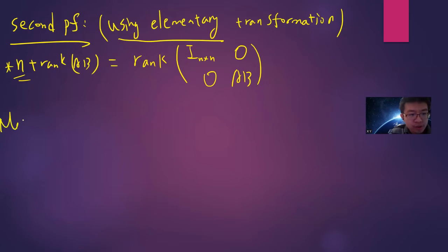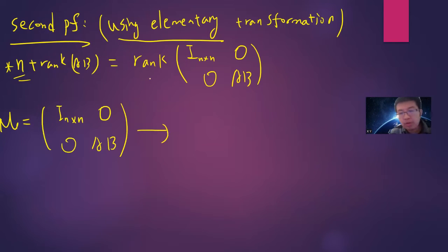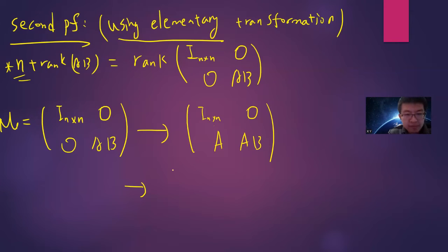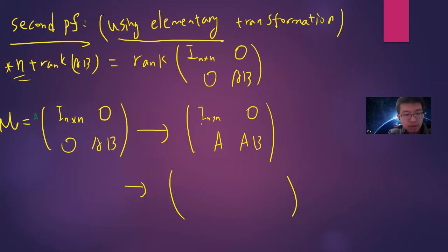Define M = [I_n, 0; A, B]. By an elementary row operation — multiplying the first row block by A and adding to the second row — we can transform the top-left block while preserving rank. The rank of M does not change under elementary transformations.